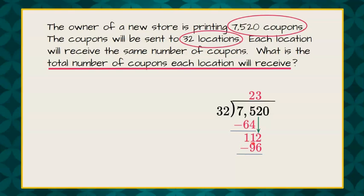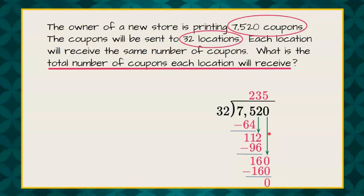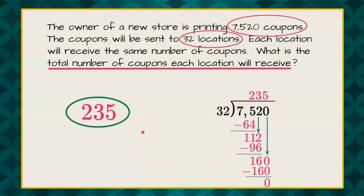Here's how I would do that as a shortcut: 96 to 100 is 4, then we have 12 more, so we have 16 between 96 and 112 when we subtract. Now we're going to bring down our final digit, which is a 0, and determine that 32 goes into 160 five times. 5 times 32 is 160. We have a remainder of 0, so we have equally distributed our 7,520 coupons to the 32 locations. Each location is going to get 235 coupons.